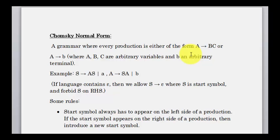If you want to know what variables and terminals are, you should look at the previous video on context-free grammar. Briefly, variables are the capital letter words and terminals are the small letter words, but that's not actually a formal definition. Variables are the ones which have rules on the left-hand side and can be derived, but terminals stay on the right-hand side and never appear on the left-hand side.